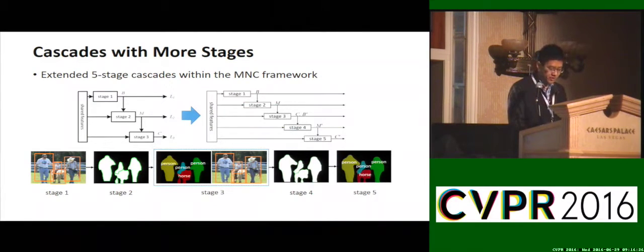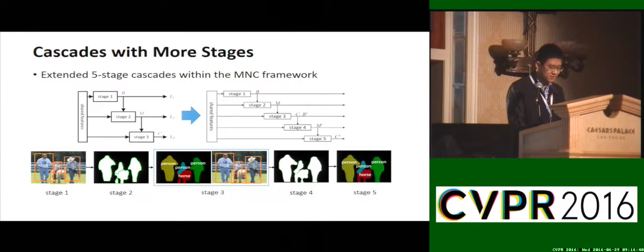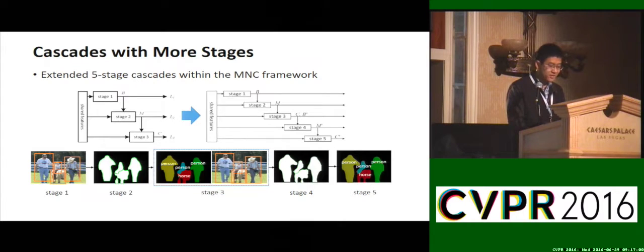Under this training framework, our cascade model can be extended to more stages, leading to improvements in accuracy. At stage 3, we further regress class-wise bounding boxes, which are then considered as new proposals. The new stages 4 and 5 share the same structures as stages 2 and 3, except they use the regressed boxes from stage 3 as new proposals. This inference process can be iterated, but we have observed negligible gains beyond this.